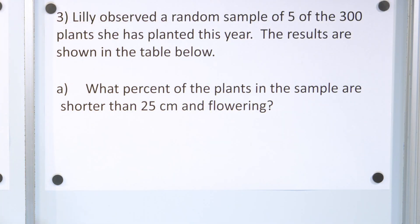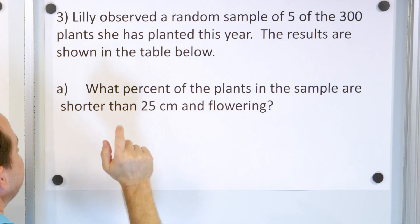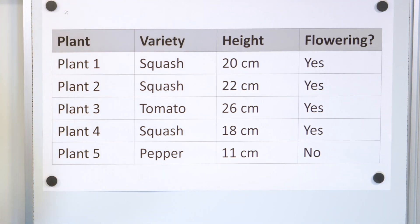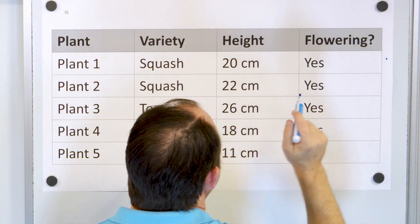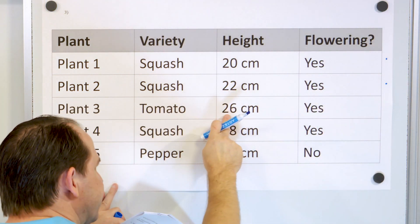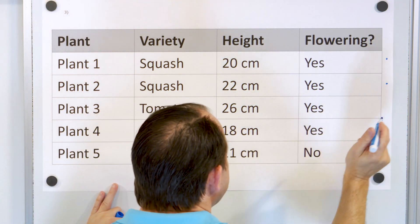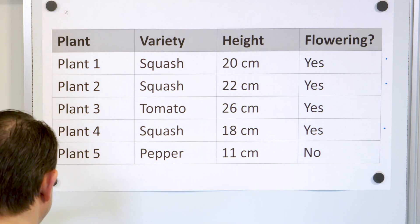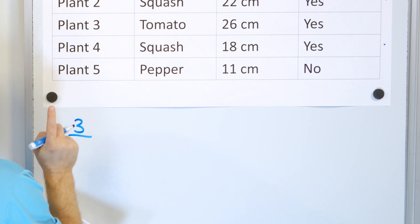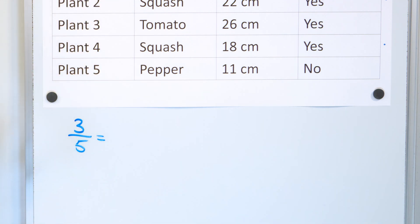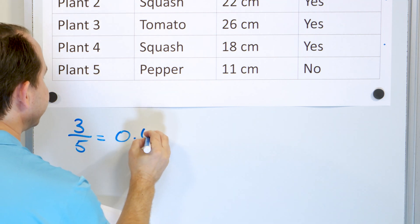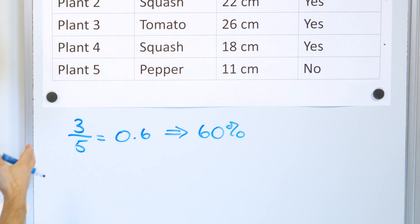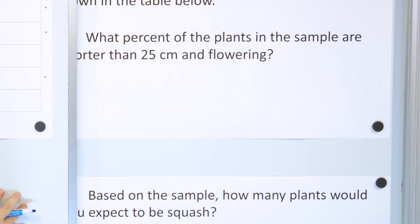Problem one: what percent of the plants in the sample are shorter than 25 centimeters and flowering? Going through the table, three plants are both shorter than 25 centimeters and flowering. One plant is not shorter than 25 centimeters, and one is shorter than 25 but not flowering — so those don't count. Three out of five is 0.6, which multiplied by 100 gives 60%.